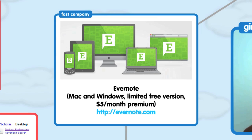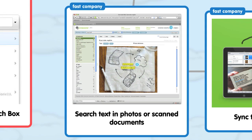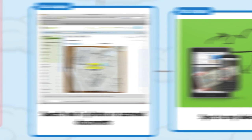If you want an easy way to capture web pages and search text and photos, try Evernote. Its browser extensions make clipping articles from the web and saving them to a notebook easy. It can even do text recognition for scanned documents or pictures. Evernote will sync your documents to the cloud, too, so you can access them from any computer or mobile device.